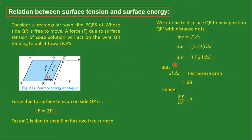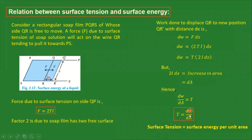Shifting dA to the other side, we get T = dW/dA. This is the relationship between surface tension and surface energy. Here dW is the work done, which is equivalent to the potential energy stored, and that potential energy is called surface energy. Therefore dW/dA is the surface energy per unit area, and surface tension T equals surface energy per unit area.